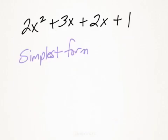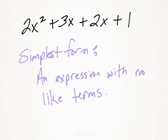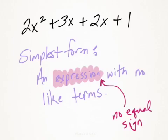So what we want to do is put this in simplest form. And simplest form is just an expression with no like terms. So we want to simplify this down where we only have one term that has an x, not two terms.